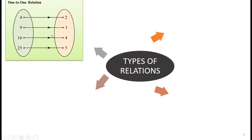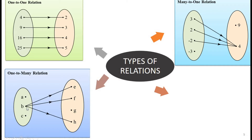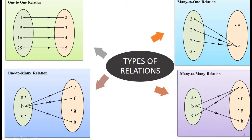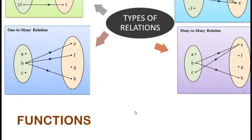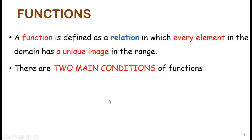There are four types of relations. First, one-to-one relation: every object in set X maps to one object in set Y. Second, many-to-one relation: many objects from set X map to one image in set Y — for example, 3, 2, and -2 all mapping to 4. Third, one-to-many relation: one object from set X maps to many images in set Y. Fourth, the combination of many-to-one and one-to-many gives us many-to-many relation.